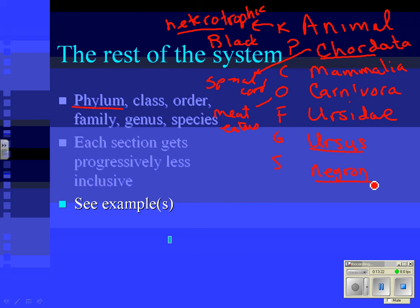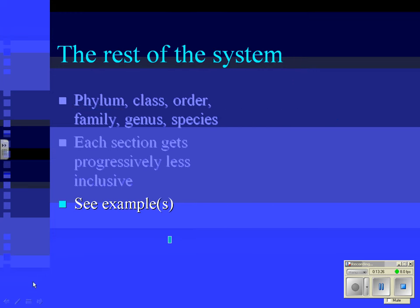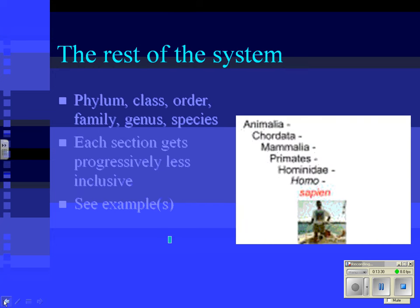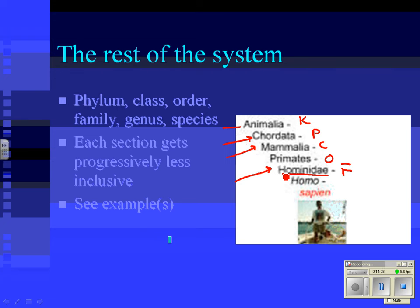Now let's look at humans as another example. Humans are animals — they have spinal cords and give birth to live young. But here's where we differ from bears: same kingdom, same phylum, same class, but we're in the order Primates. All primates stand on two feet and their eyes face forward. We're in the family Hominidae because we stand on two feet — we're the only primates that walk on two feet. Then genus Homo, species sapiens.